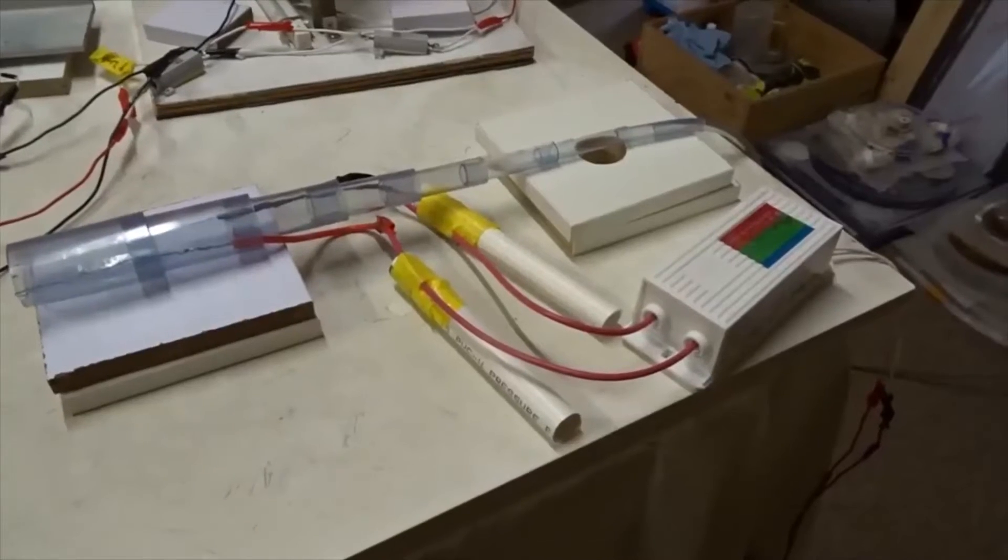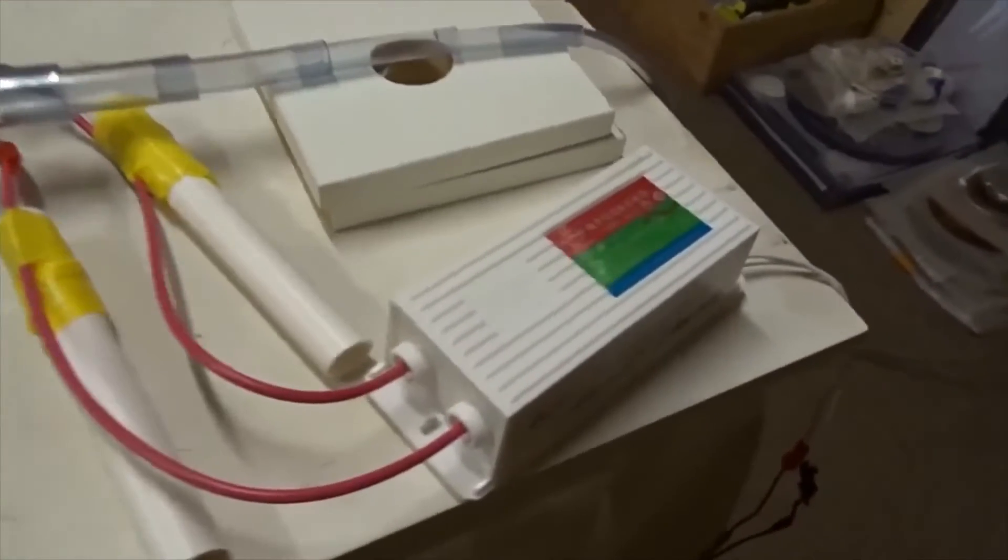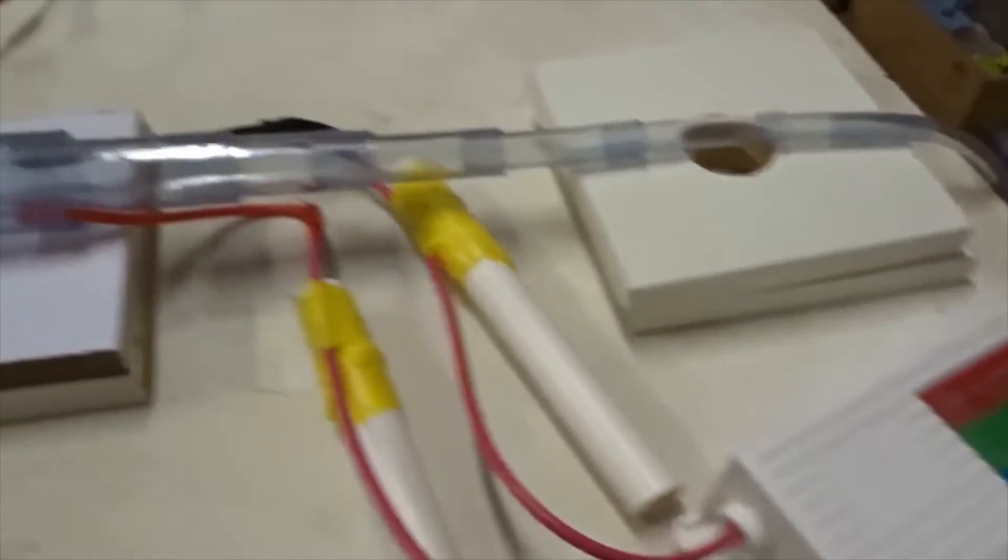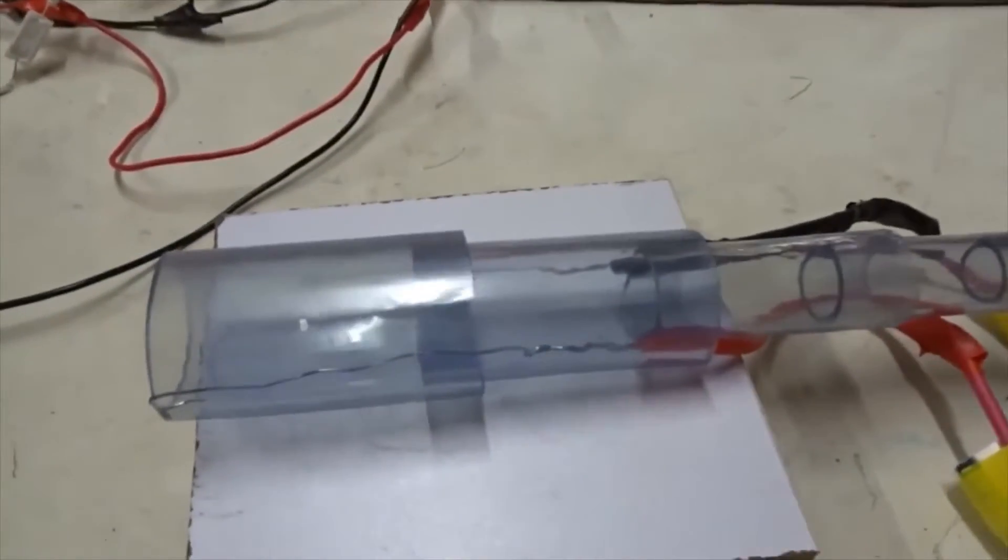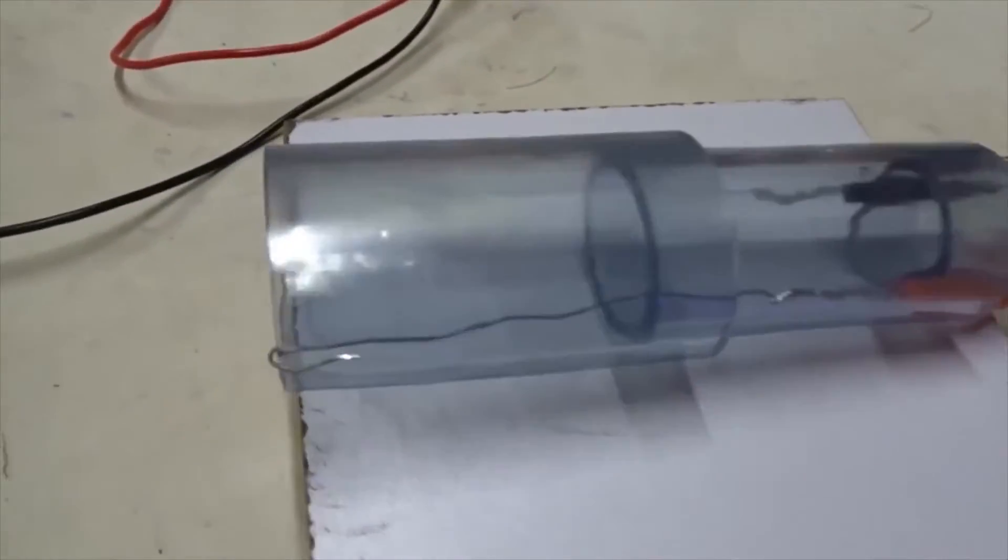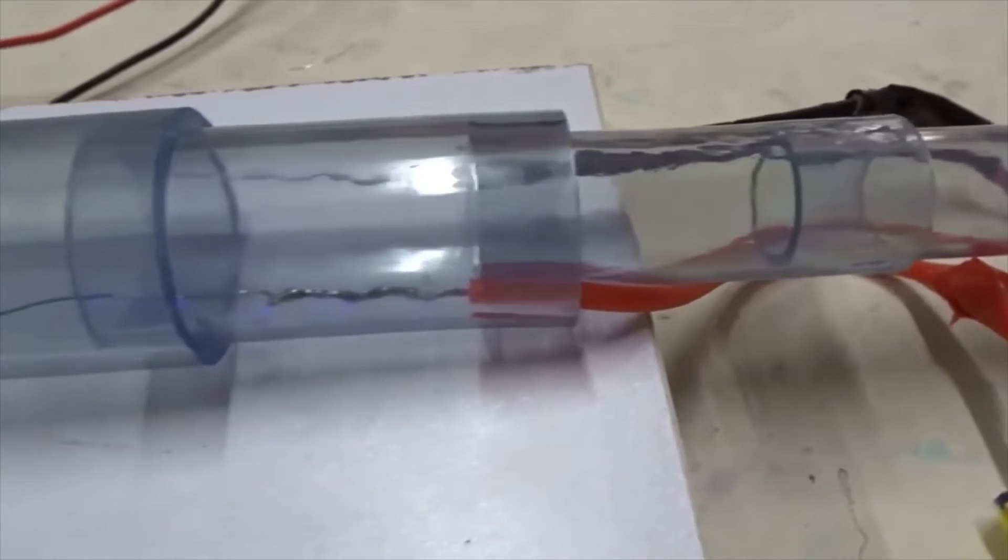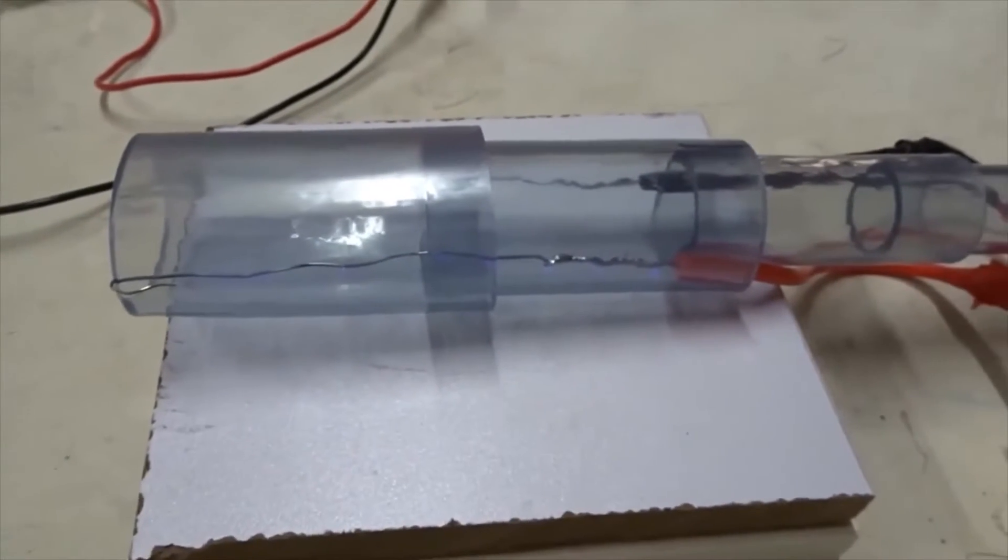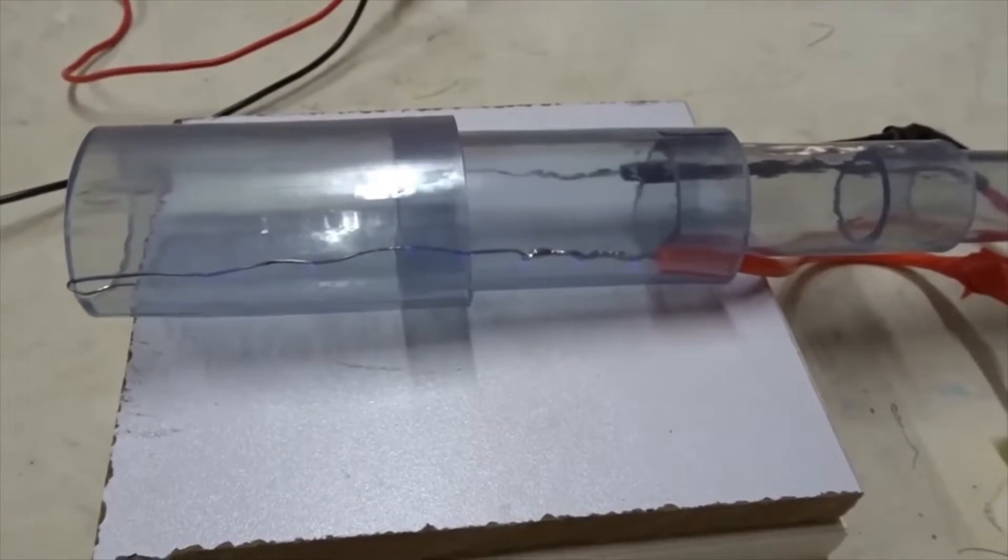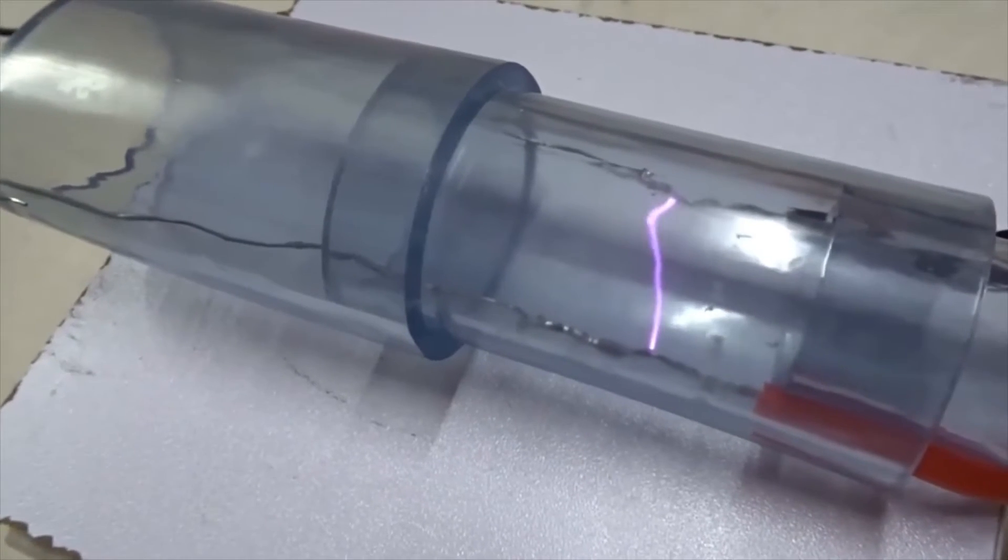Next, we're going to add 10 kilovolt AC from this small neon sign transformer into these two leads. You can again hear the buzzing and humming as the air itself gets ionized. Let's add some argon gas now and see what happens. Here comes the argon gas.